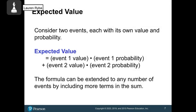This leads to the concept of expected value. Let's say we have two events, each with its own value and probability. Well, we can find the overall expected value by taking the first event's value times its probability and adding that to the second event's value times its probability. And we could expand that to three events, four events, five events, however many we have, we could find the overall expected value of some situation.